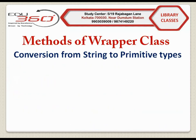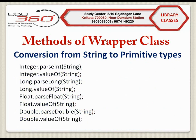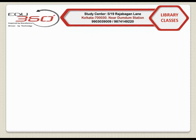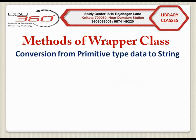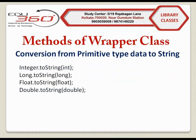Methods of wrapper class — conversion from string to primitive types: Integer.parseInt, Integer.valueOf, Long.parseLong, Long.valueOf, Float.parseFloat, Float.valueOf, Double.parseDouble, and Double.valueOf. Conversion from primitive type data to string: Integer.toString, Long.toString, Float.toString, Double.toString.